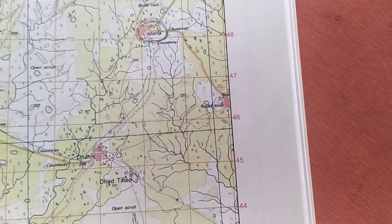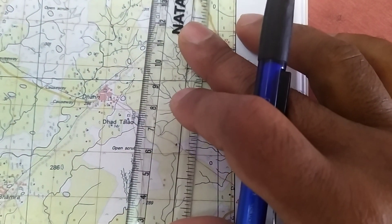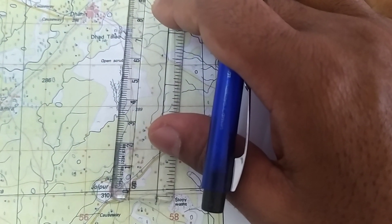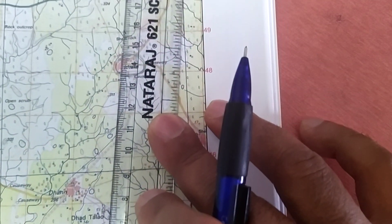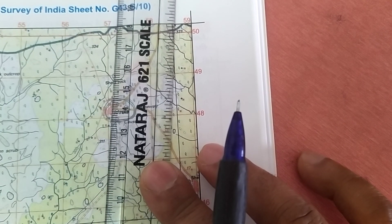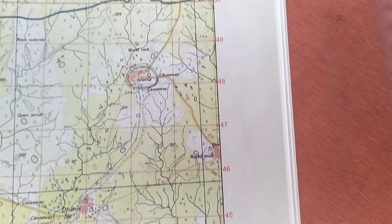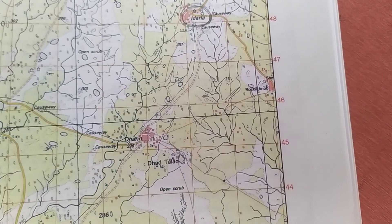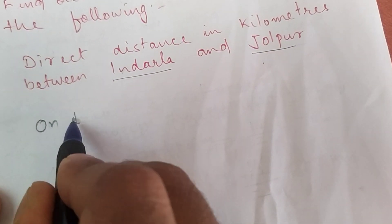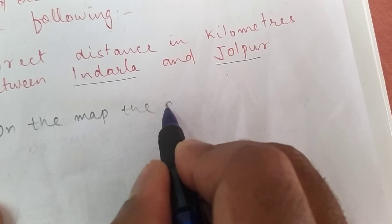First, locate both villages on the toposheet — here is Jholpur and here is Inderla. Take the scale and place it from Jholpur to Inderla. You can see the distance measures 14 centimeters.